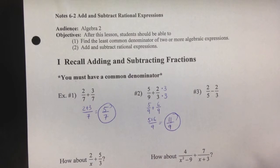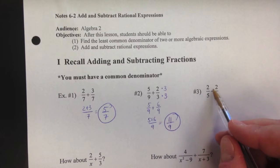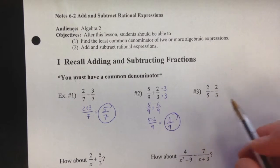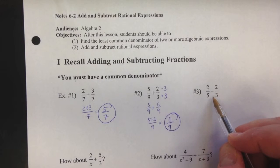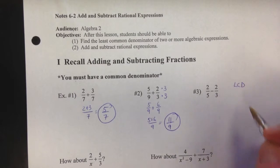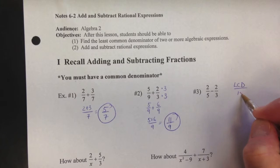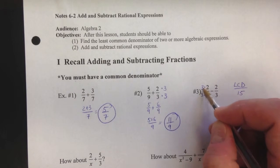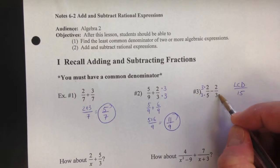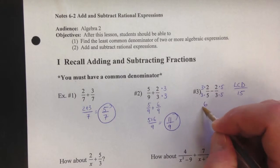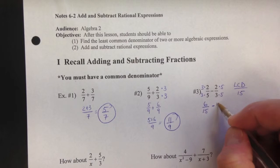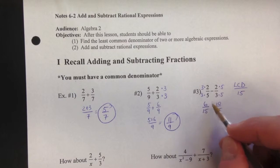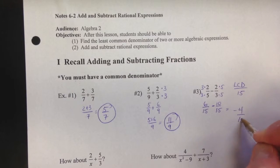When you add and subtract fractions, you do not add the denominators — just the numerators. For 2 fifths minus 2 thirds, 5 and 3 are not the same, so we need a common denominator. The LCD, least common denominator, is 15. To change the 5 to a 15, multiply top and bottom by 3. To change the 3 to a 15, multiply top and bottom by 5. We get 6 over 15 minus 10 over 15, which gives us negative 4 over 15.